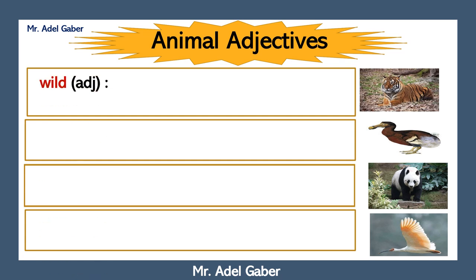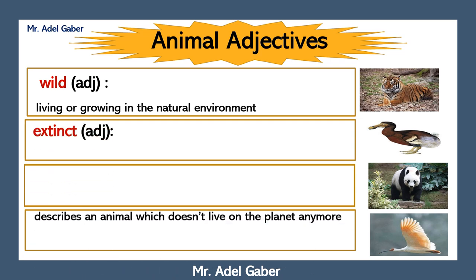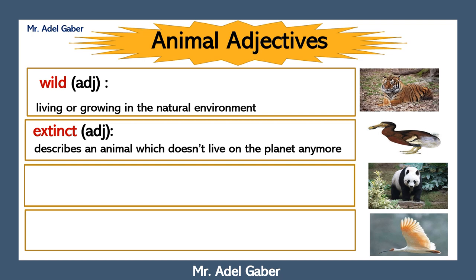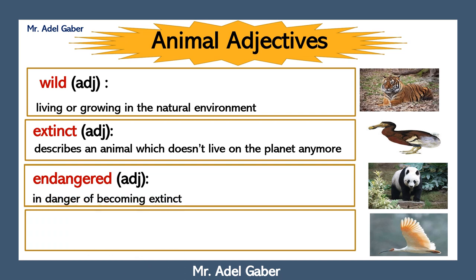Wild animals: animals living or growing in the natural environment, like this tiger. Extinct animals: describes an animal which doesn't live on the planet anymore, like the dodo. Endangered animals: animals in danger of becoming extinct, like this panda.